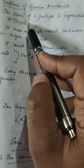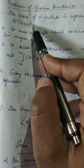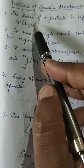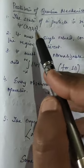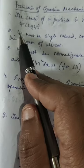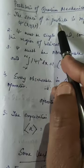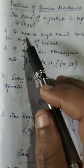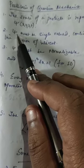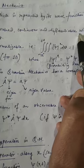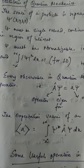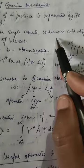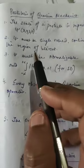Now some properties of psi. In order for psi to represent the state of a particle it must have some properties. Since psi is a mathematical object, it must be single-valued, continuous, and differentiable within the region of interest.